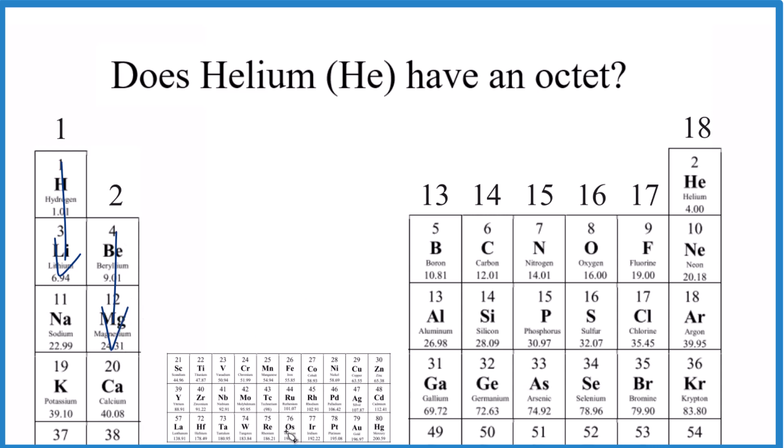We skip the transition metals, they're a little complicated. Group 13 has 3, 14 has 4, 15 has 5, 16 has 6, group 17 has 7, and then 18, these have 8, with the exception of helium.